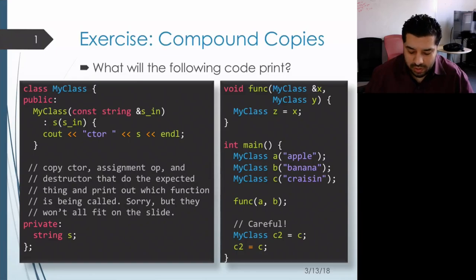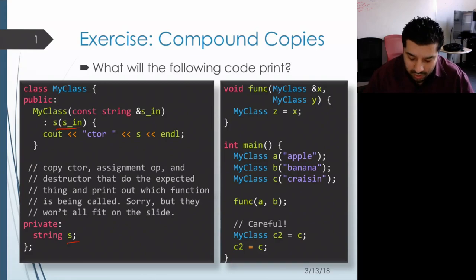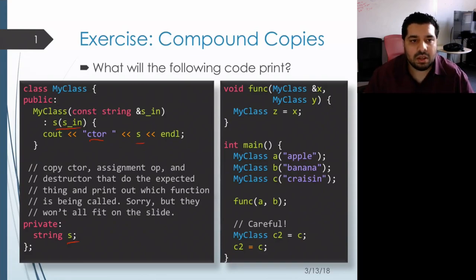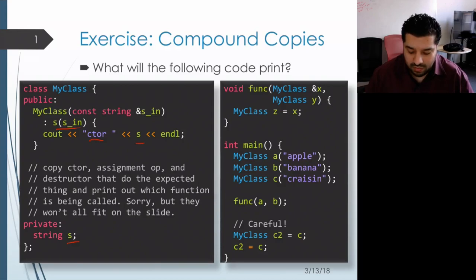In this exercise, we have a class that has a constructor that takes in a string and saves a copy of that string in a member variable s. The constructor also prints out 'ctor' followed by the string that is saved. The class also has a copy constructor that prints out 'copy ctor' and then the string that is saved.